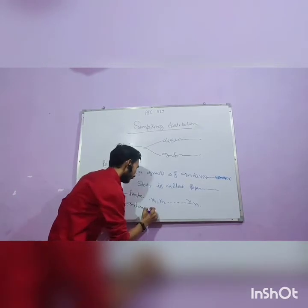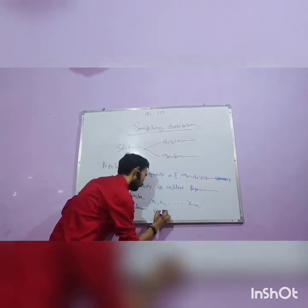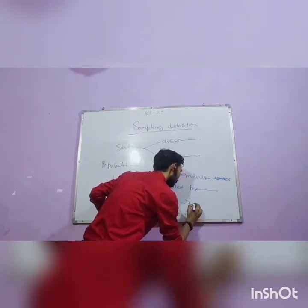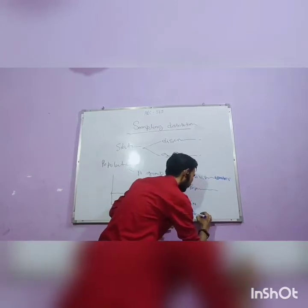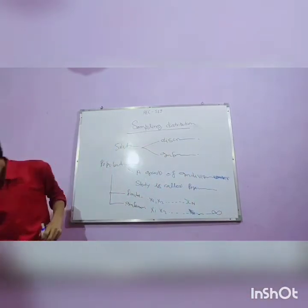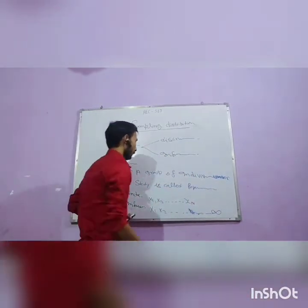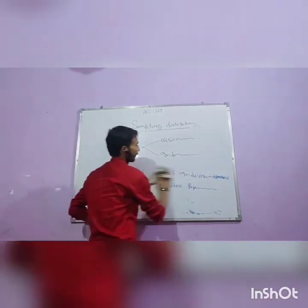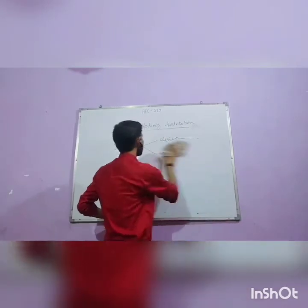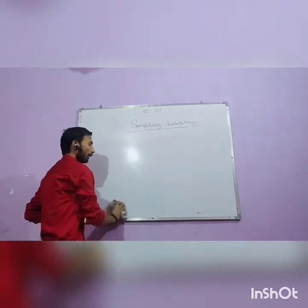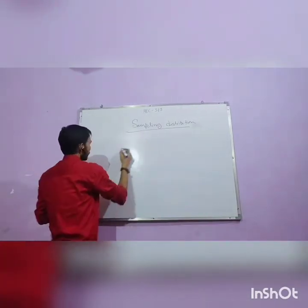Infinite population is written in the form x1, x2, dot dot dot, xN, xN, and xN following to infinity. Sometimes the finite population is very large and it is close to the infinite population.